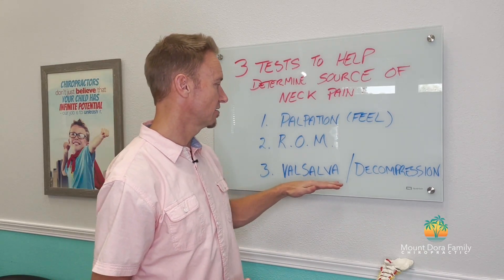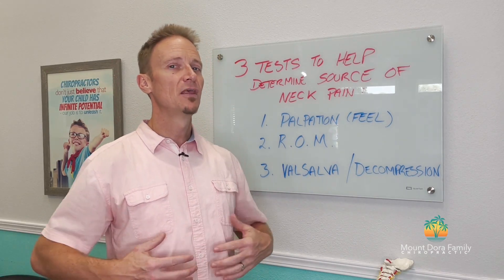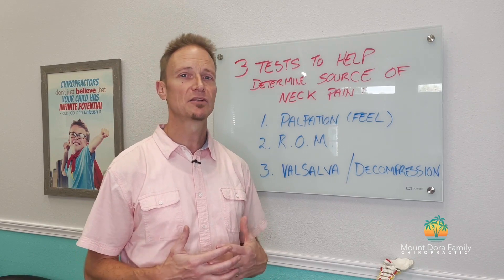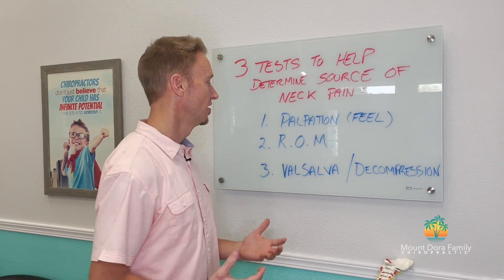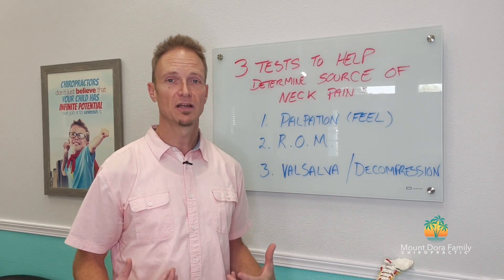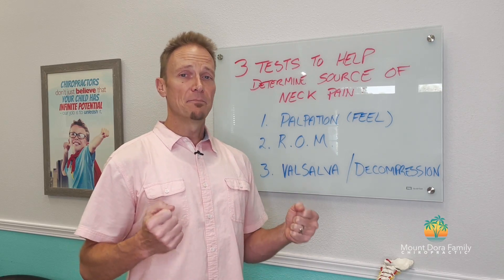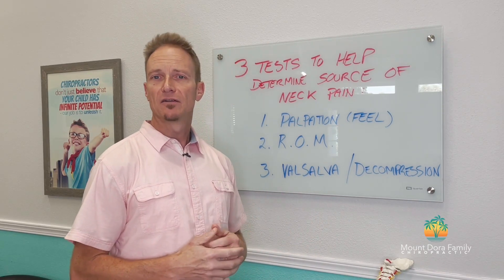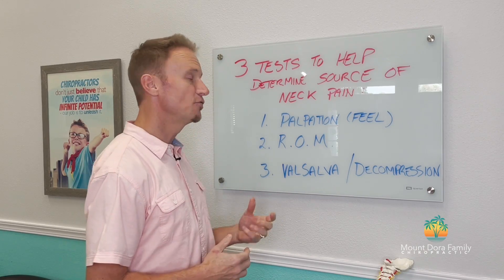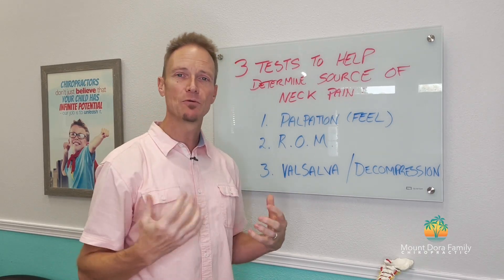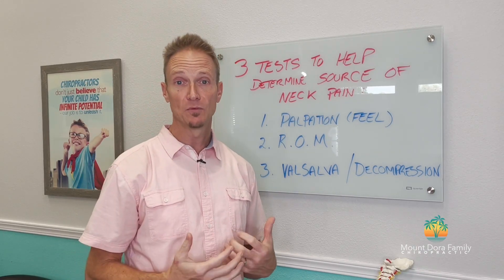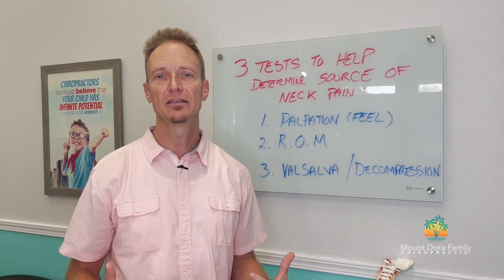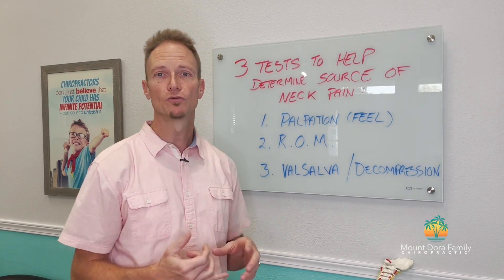The next test we're going to look at is called Valsalva and decompression. We're kind of looking for whether you actually have a disc issue or potentially nerve irritation. Valsalva is really simple: you're going to take a breath in and bear down — like you're holding your breath and bearing down — just for a couple of seconds. If you feel pain elicited anywhere along your spine, that's an indication you have what's known as a space-occupying lesion, a disc bulge, or disc injury.